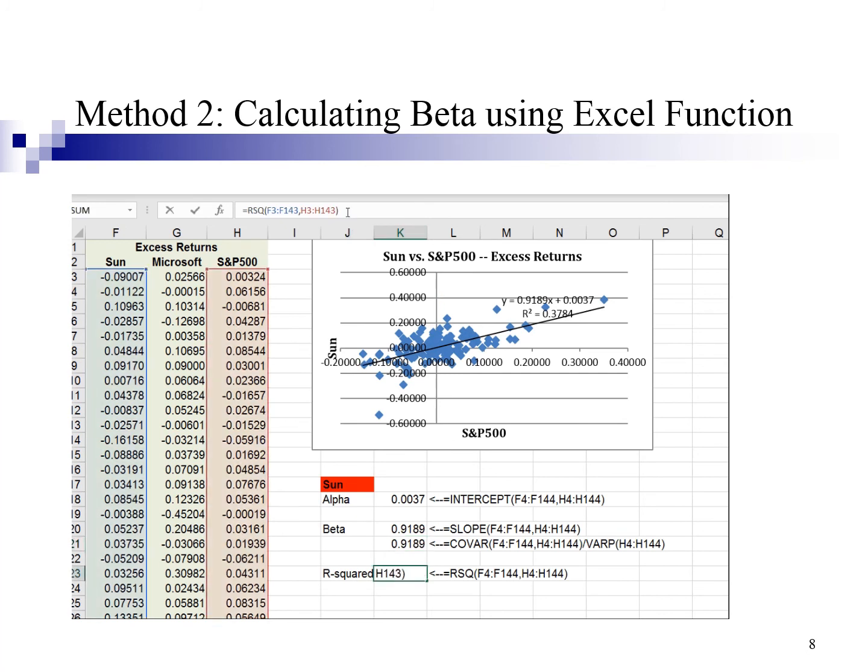R square is obtained from the formula R square equal RS squared, and we shall highlight variable Y, the stock excess return, and variable X, the S&P 500 excess return accordingly.